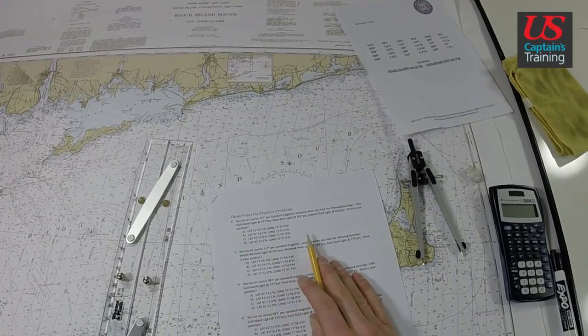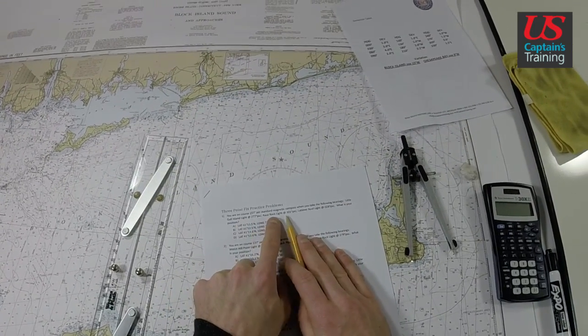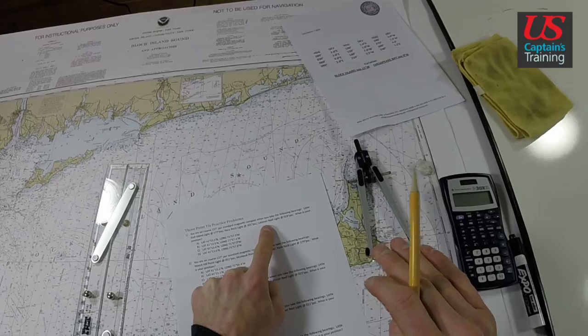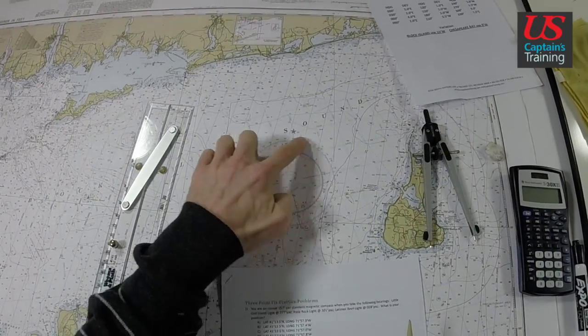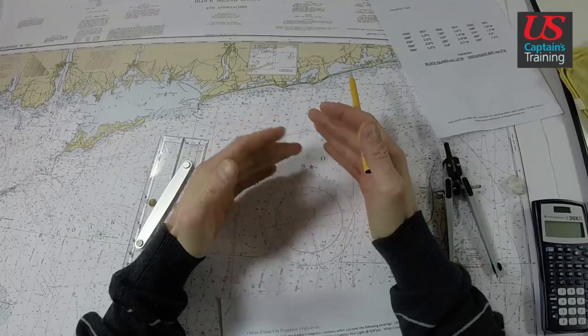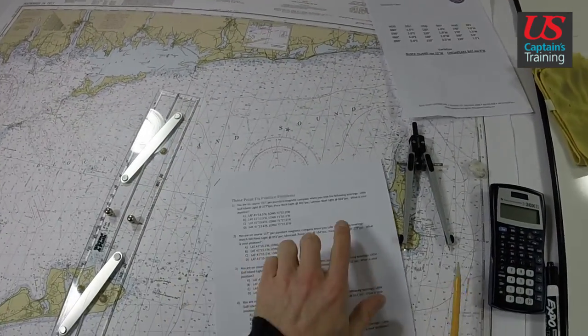We need to take these three bearings. They're in PSC, or down at compass. We need to take them to true so we can use this outer ring of the compass rose, plot them on the chart, and get our position.